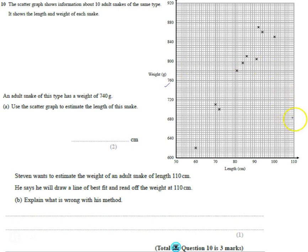Okay, so we have a scatter graph with 10 snakes, numbered 1, 2, 3, 4, 5, 6, 7, 8, 9, 10, and it shows the length and weight of each of these snakes.